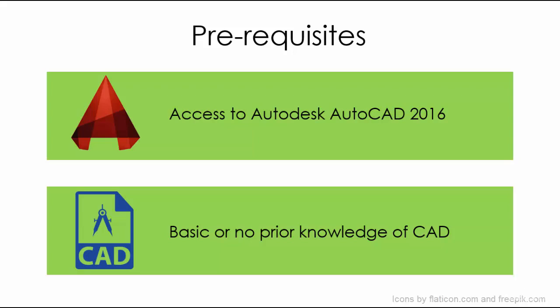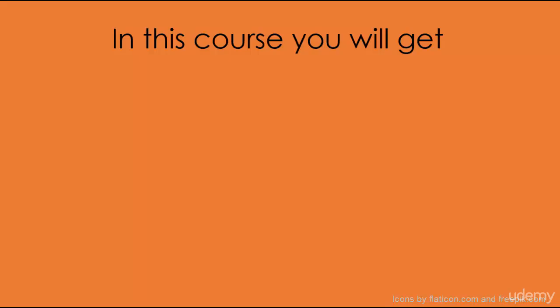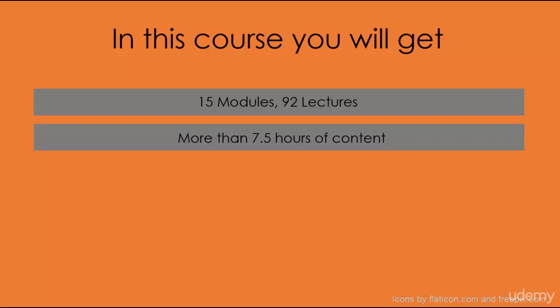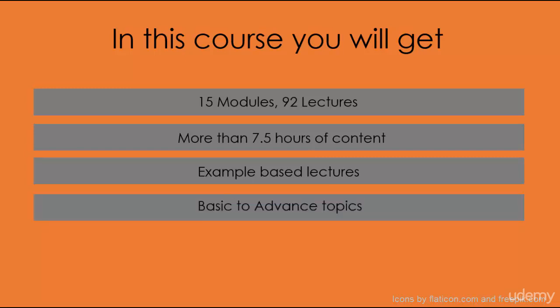So you don't have to worry about the level of lectures in this course. They are very basic and gradually increase from basic to advanced. In this course, you will get 15 modules and 92 lectures, more than 7.5 hours of content, and all the lectures are example-based. So you'll work with actual scenarios and drawings. The course is designed so that a student with little or no knowledge of AutoCAD can start learning right away.